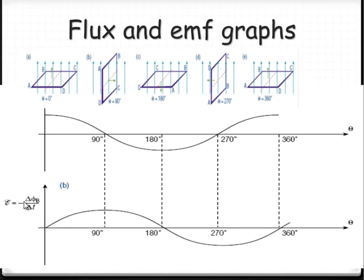Now let's look at the EMF that's induced. When we have maximum flux, we have no EMF. As it rotates, we produce a larger and larger EMF, with the maximum corresponding to when the coil is parallel to the field — when it's cutting across the magnetic field lines. That's when it's going to induce the most EMF. Think of it in terms of force on a wire moving through a magnetic field; when it cuts those field lines, that's when it induces the most current. Then it gets back to maximum flux, corresponding to zero EMF.